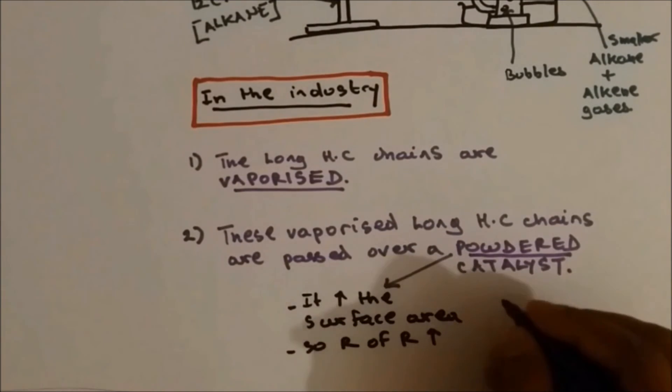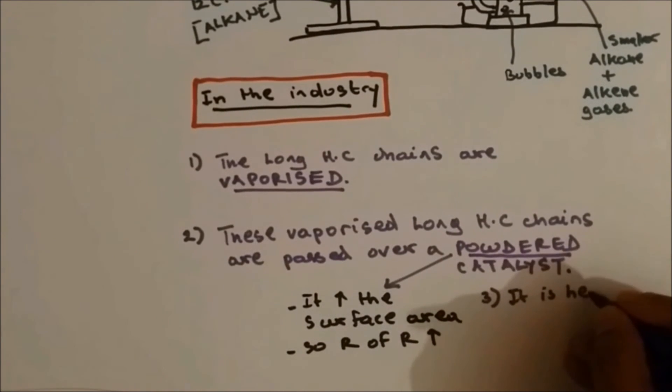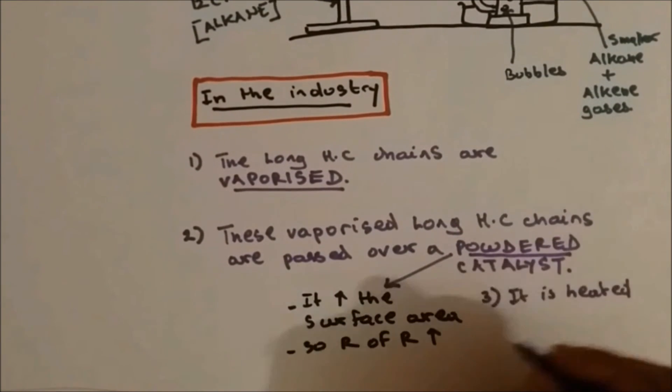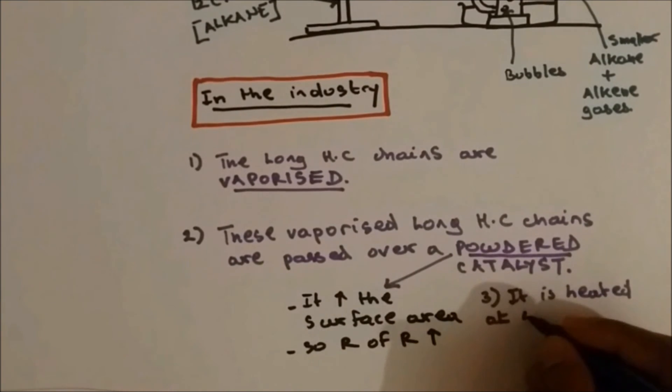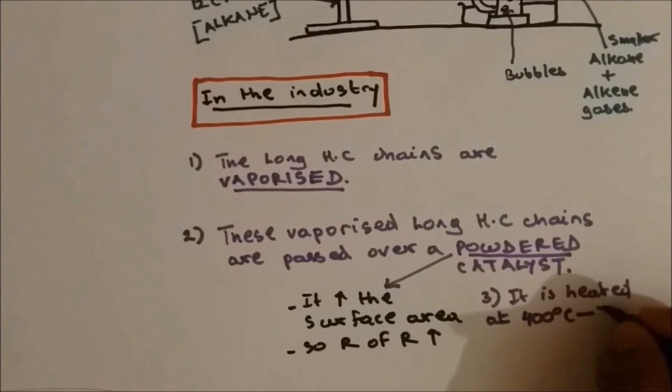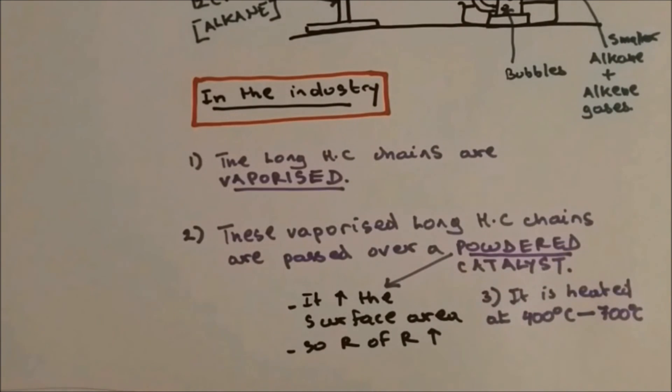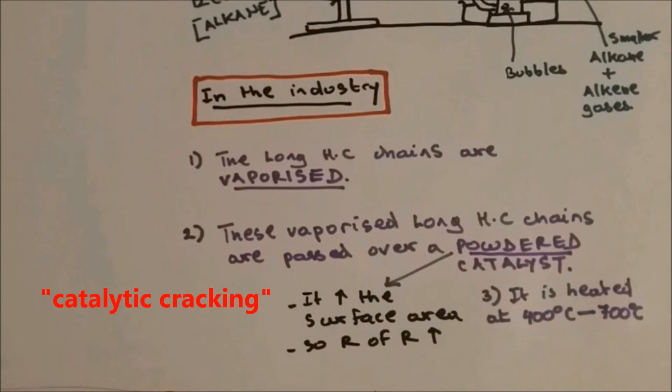The third step: it is heated at 400 degrees Celsius to 700 degrees Celsius. So we are looking around 550 degrees Celsius temperature. So this is how cracking is done in the industry. Since catalyst is used to crack the long hydrocarbon chain, this can be called catalytic cracking.